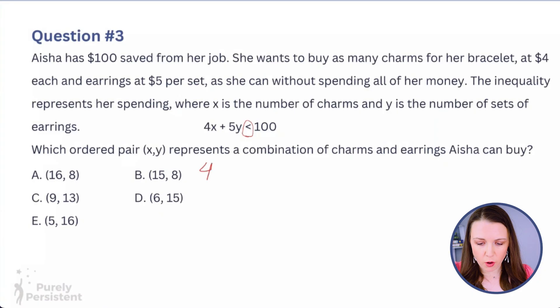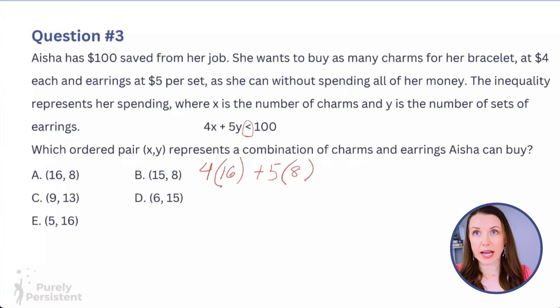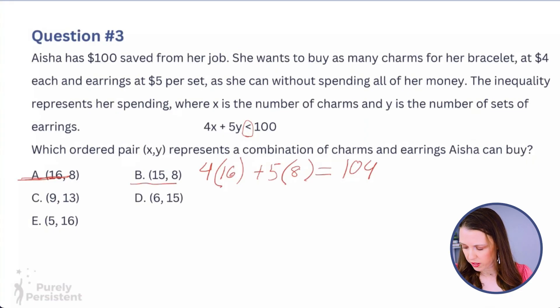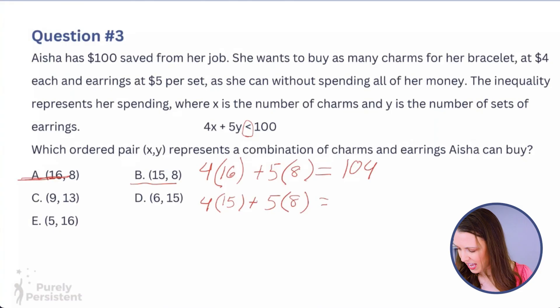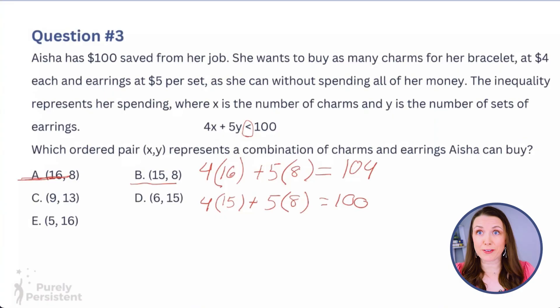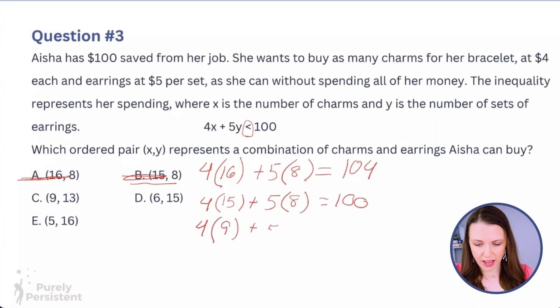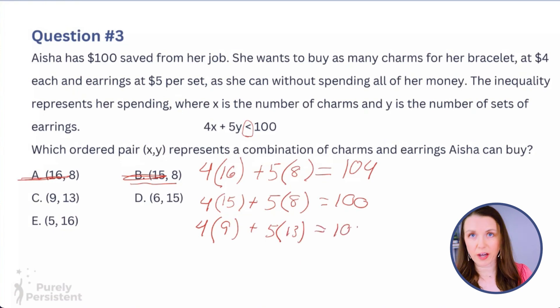We're looking for which ordered pair gives a total less than $100. Let's test them. Option A: 4(16) + 5(8) = 64 + 40 = 104 — no, that's over $100. Option B: 4(15) + 5(8) = 60 + 40 = 100 — no, it must be strictly less than 100. Option C: 4(9) + 5(13) = 36 + 65 = 101 — no, still over.